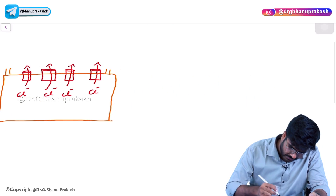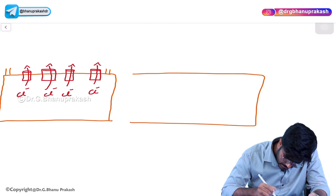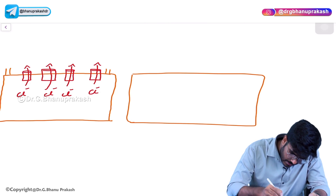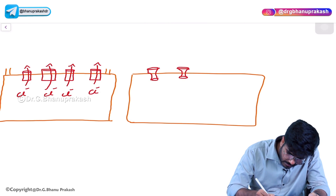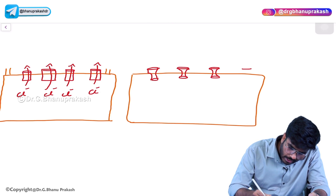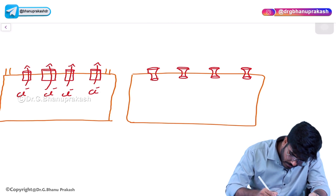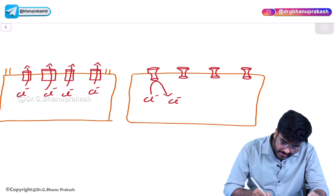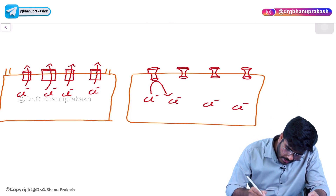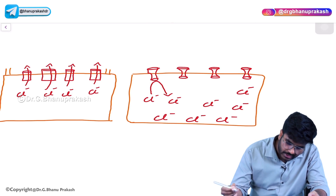But in a patient who has cystic fibrosis, these channels are mutated because of the CFTR gene mutation. Whenever the channels are mutated, they are no longer going to send the chloride out. Chloride is not going out and is getting accumulated inside the cell. So negative charges are getting accumulated into the cell.